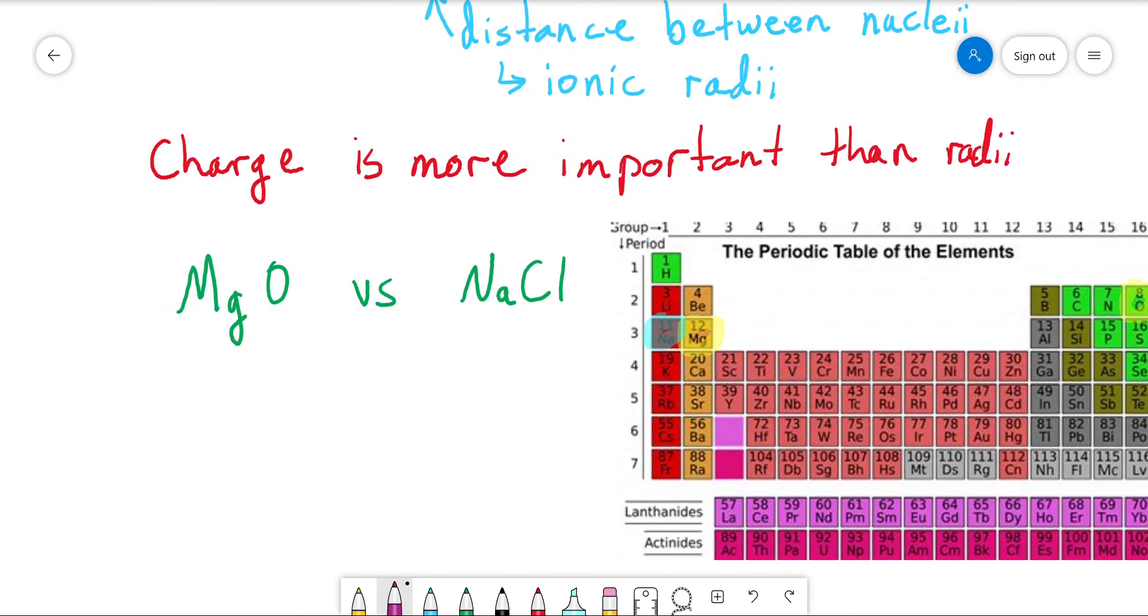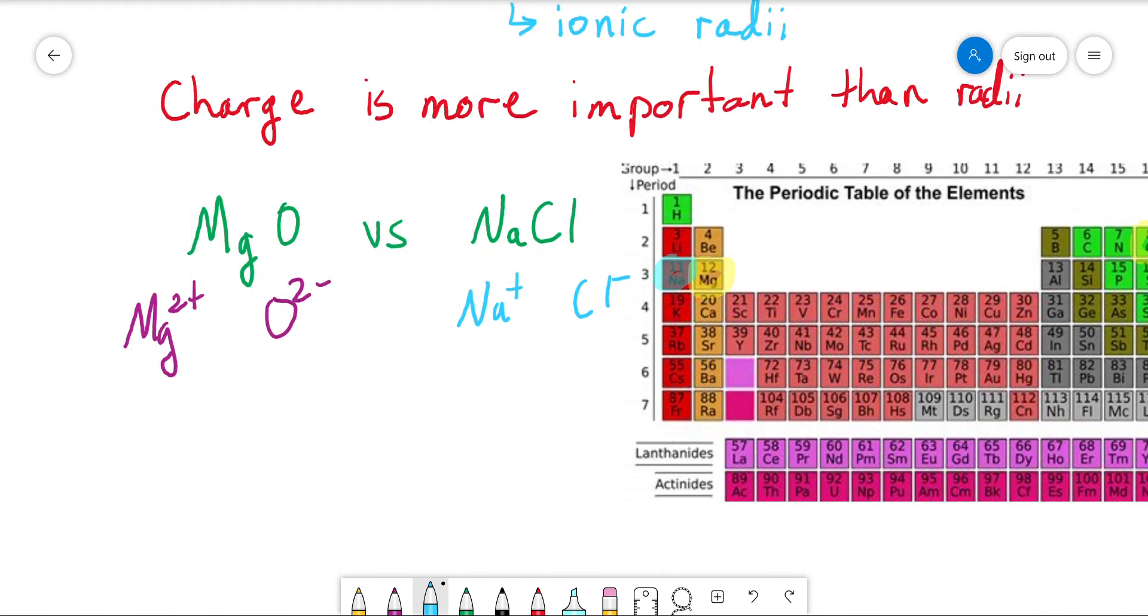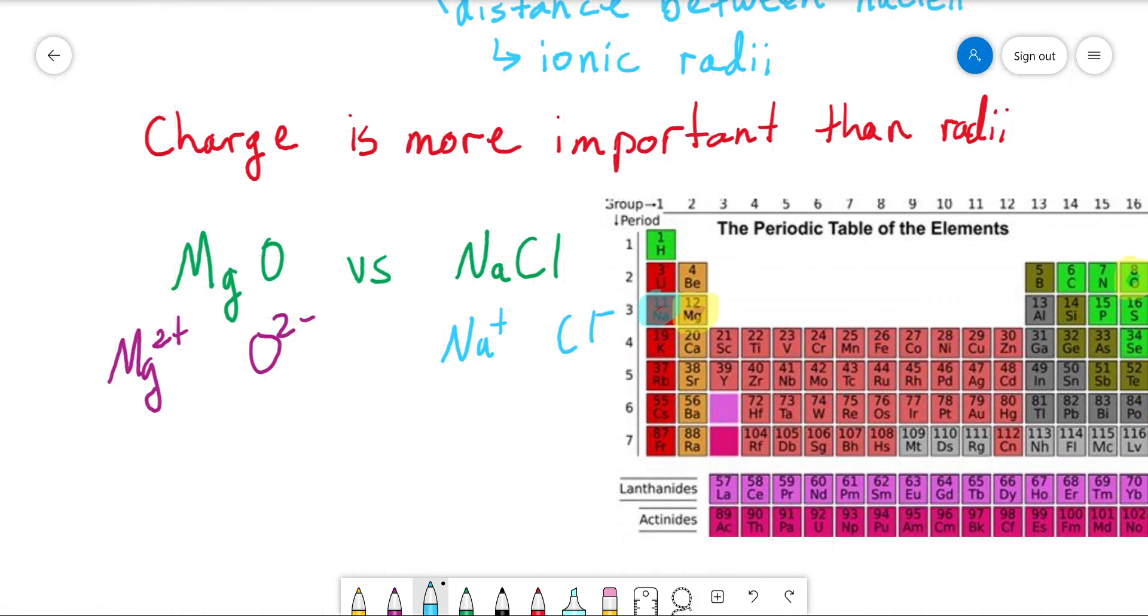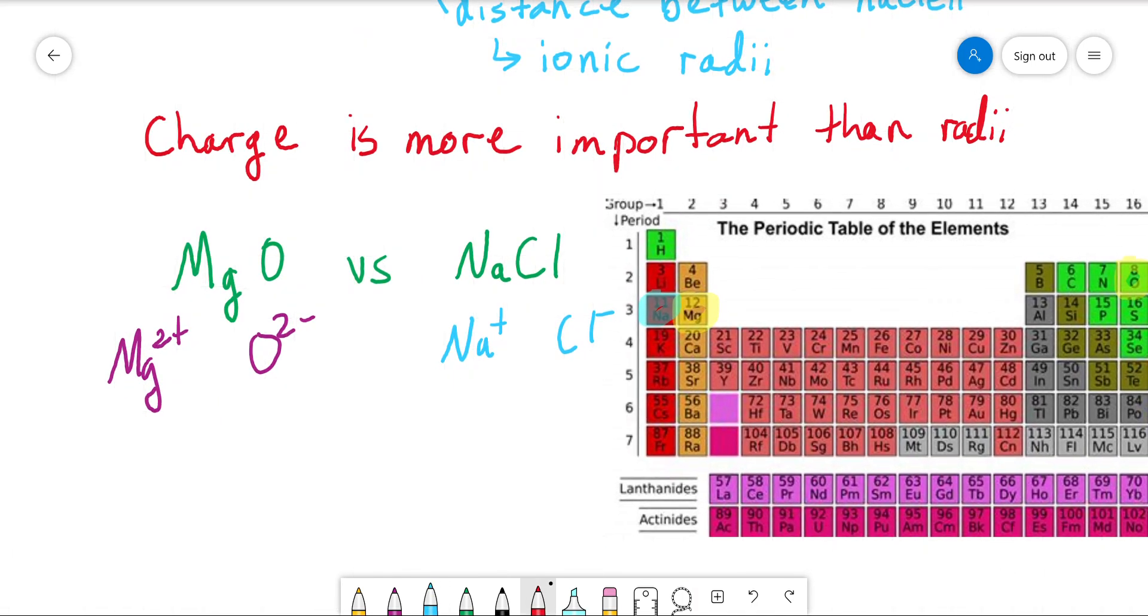Well, we have an Mg2 plus and an O2 minus. And we have an Na plus and a Cl minus. What does that mean? Well, if the cations and the anions were exactly the same size, the magnesium oxide would have a lattice energy four times bigger than sodium chloride. Simply because we have a plus two times a negative two versus a plus one times a negative one.